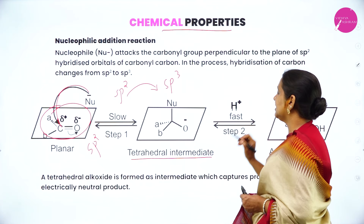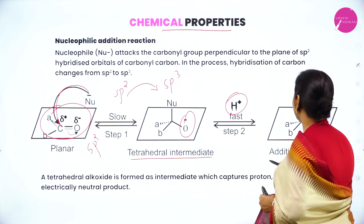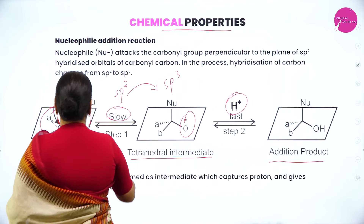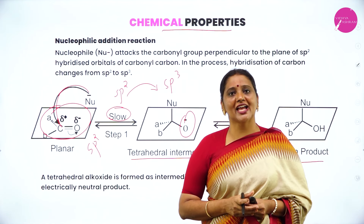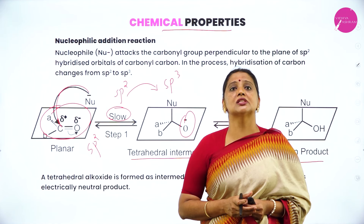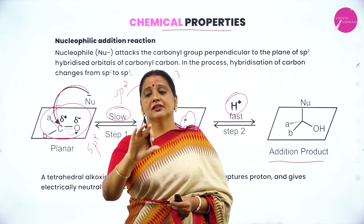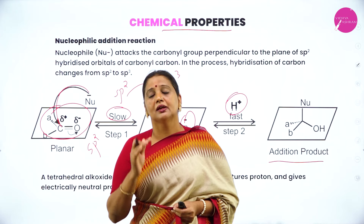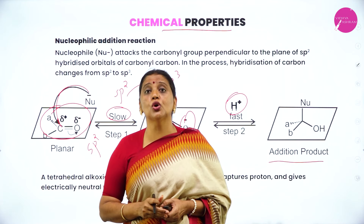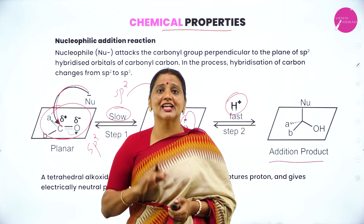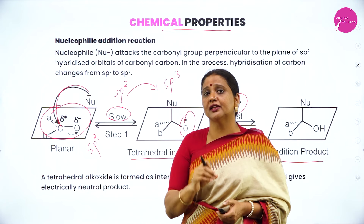The geometry changes from trigonal planar to tetrahedral. In the second step, the O minus captures H plus to form the neutral product. Of these two steps, step one is the slowest and is therefore called the rate-determining step — as discussed in chemical kinetics, the slowest step in a complex reaction determines the overall rate. In nucleophilic addition, the nucleophile attacks the carbonyl carbon perpendicularly, unlike SN2 which attacks from the back side.